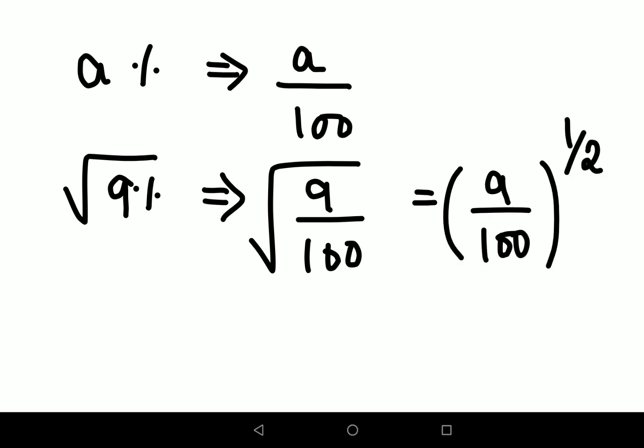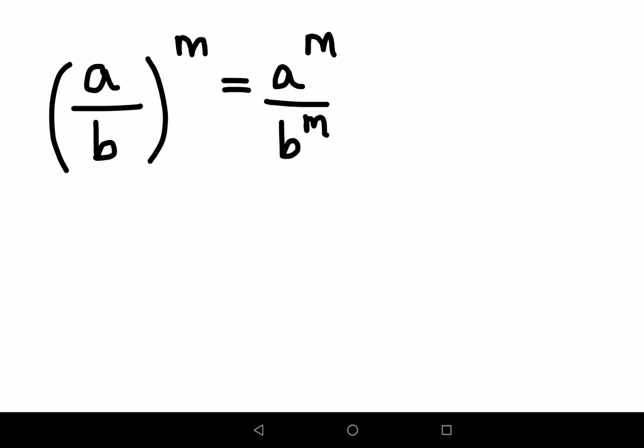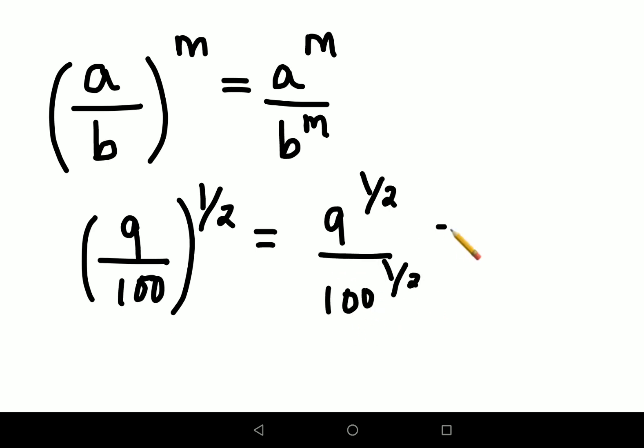There's another law of indices you need to remember. When you have (a/b) raised to any index, you can split the index with the numerator as well as the denominator. Since we had (9/100) raised to 1/2, this can be written as 9^(1/2) / 100^(1/2), which is basically √9 / √100.